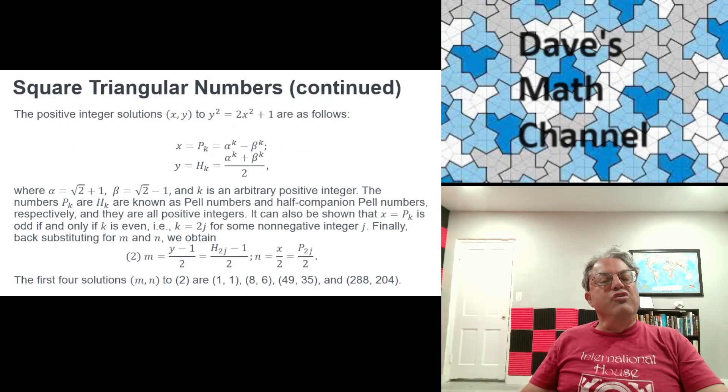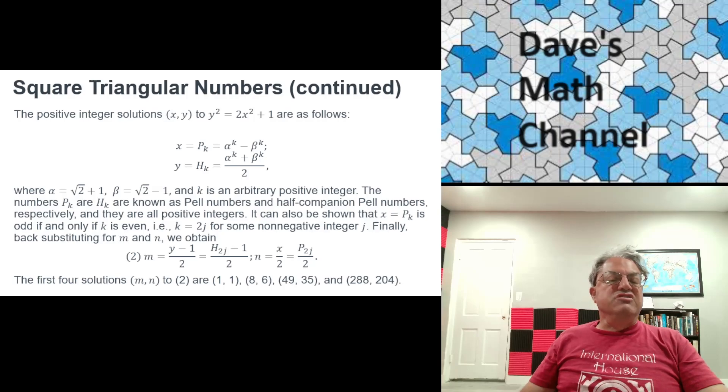Which is going to be p2j over 2. Remember, I said the index of the Pell numbers and the half companion Pell numbers has to be even, so I rewrote as 2j. So n has to be p2j over 2 and m has to be h2j minus 1 over 2. That's the general solution.